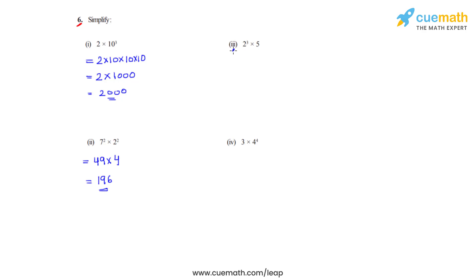Coming to the third bit, we have 2 cubed times 5. So 2 cubed is 8; we multiply it with 5, and 8 fives are 40. So the answer after simplification is 40 for the third bit.